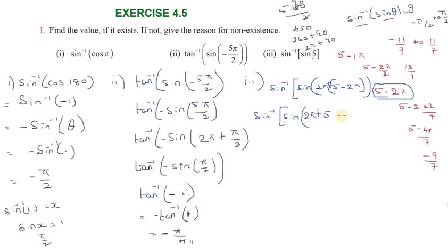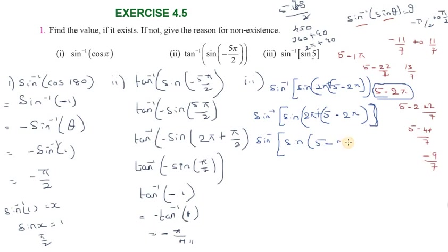So 5 minus 2π: we verify this is within the correct range. Using sine inverse of sin(2π plus theta) equals theta, we rewrite as sine inverse of sin(5 minus 2π). So sine inverse of sin(5 minus 2π) equals 5 minus 2π. That is the final answer.